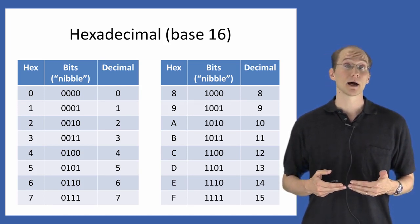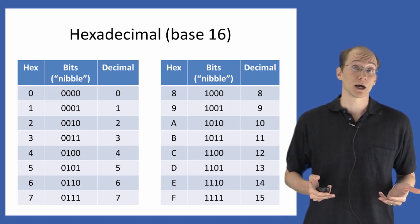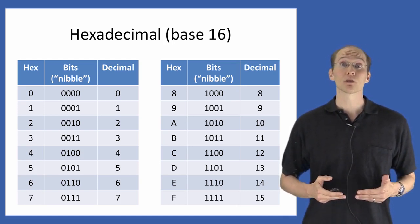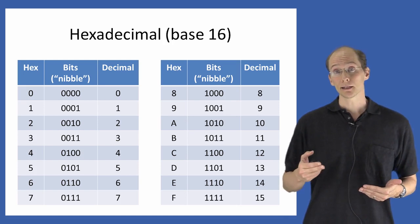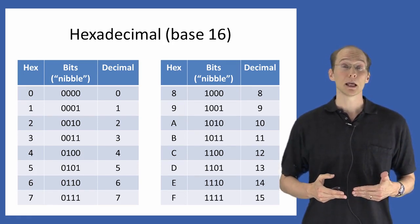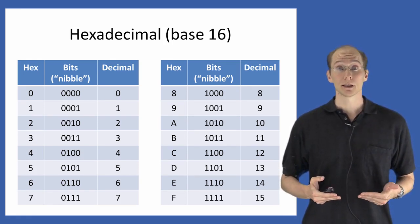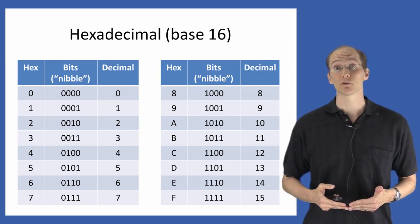Those digits are represented by the numbers 0 through 9, along with the six letters A through F. And as indicated in the table here, each of those hexadecimal digits corresponds to a different value in the range of 0 to 15.